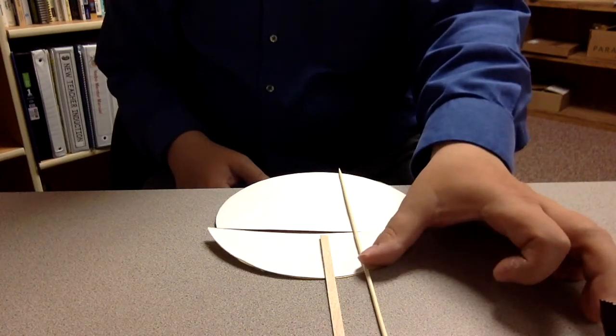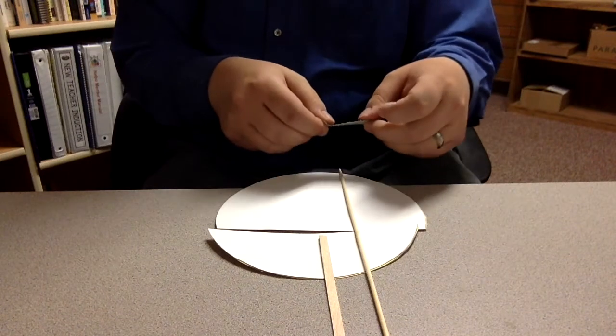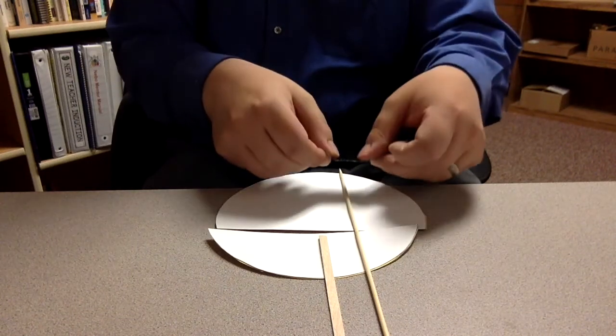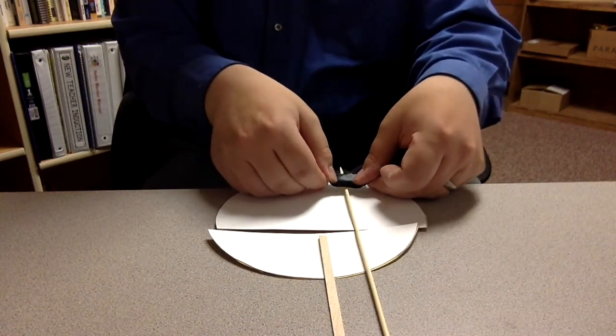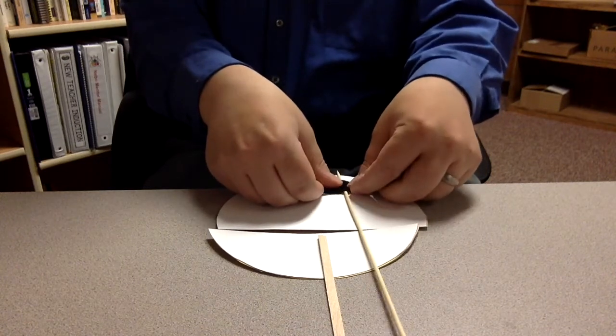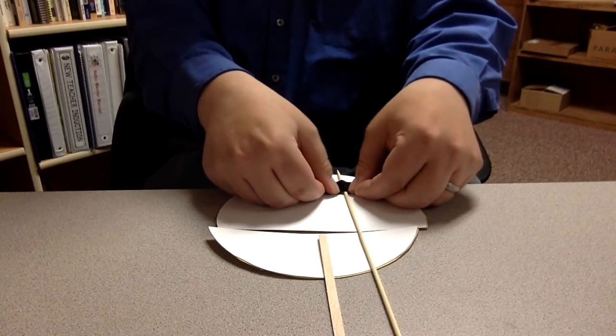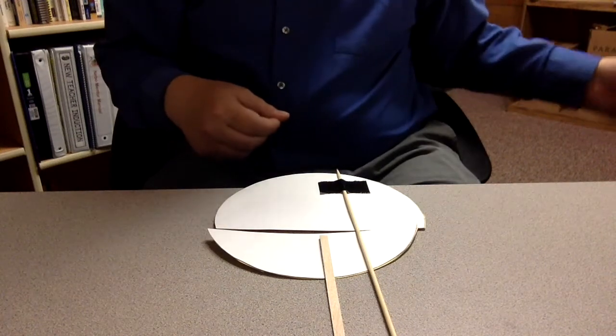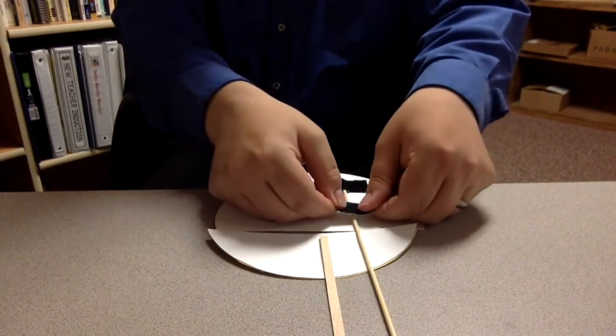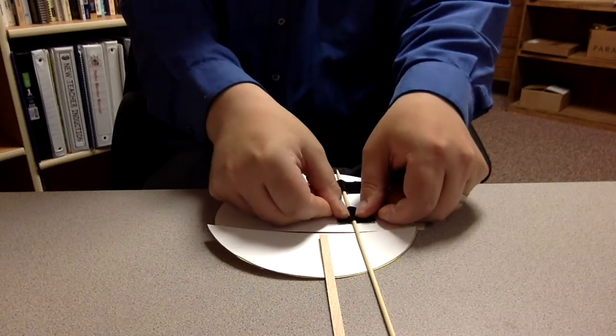The skewer should be a little bit offset to the right because that's going to be the thing that they hold on to when they're holding up the puppet. So I'll just put some tape here at the top, and then I'll just use a little extra tape to keep it nice and secure.